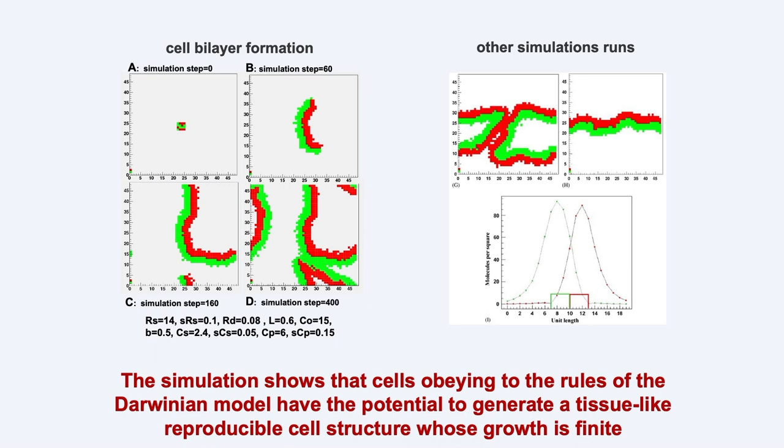Each time the simulation is run again, the same cell bilayer organization is always reproduced. Two other examples are shown at the top right of the slide. The shape of the worm may vary longitudinally, but the typical cell bilayer structure and organization is always reproduced. Thus, the simulation shows that cells obeying the rules of the Darwinian model have the potential to generate reproducible tissue organization of finite growth. We next wanted to understand why growth is finite in this structure — this was quite an unexpected result, because when we started this work we were thinking of tissue organization but not really of the control of cell proliferation. In the computer program, there is no explicit stop command saying to the cell to stop dividing.